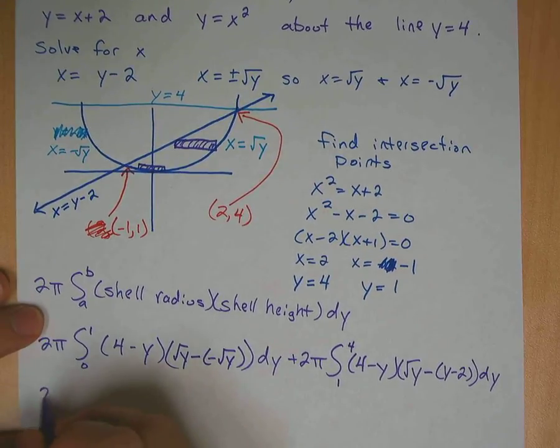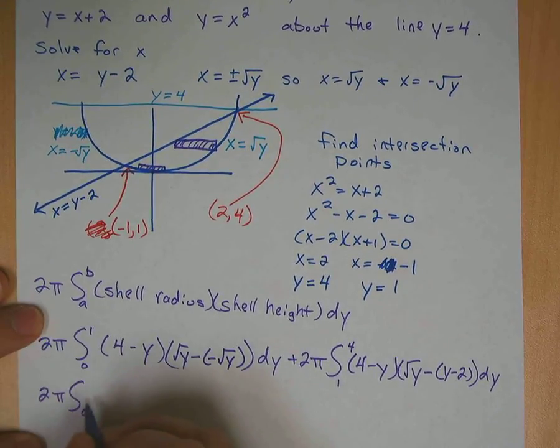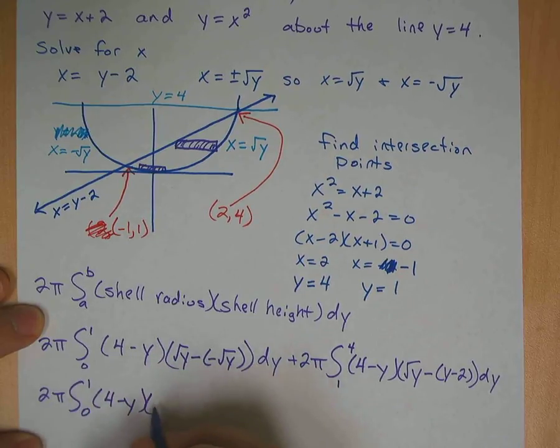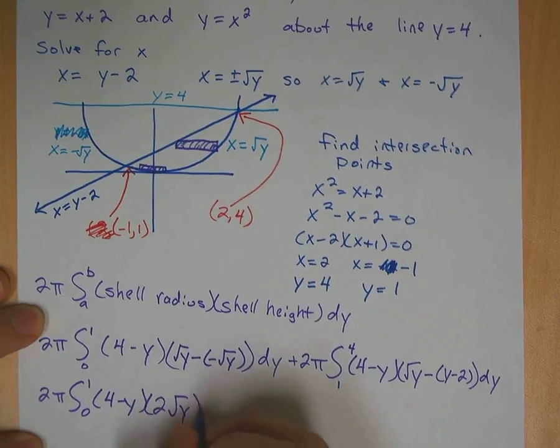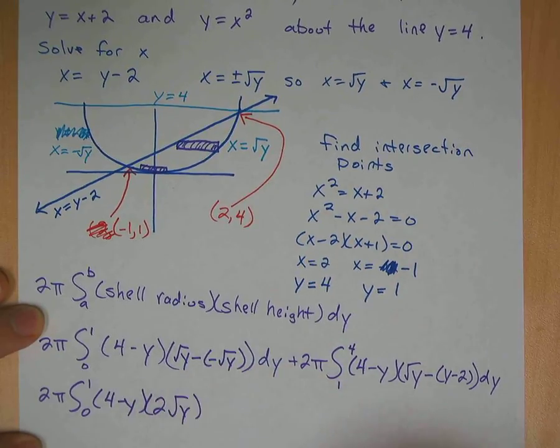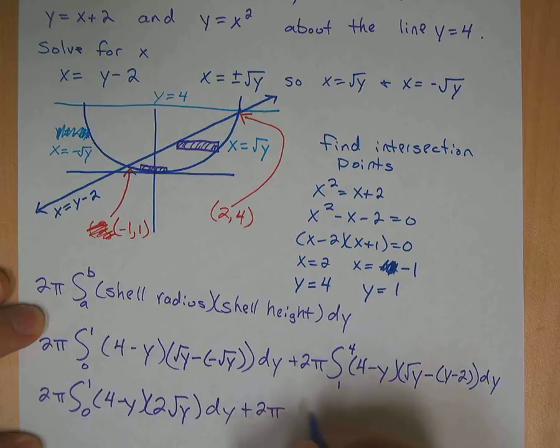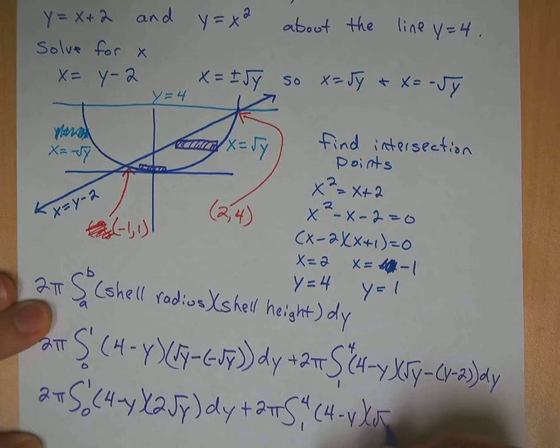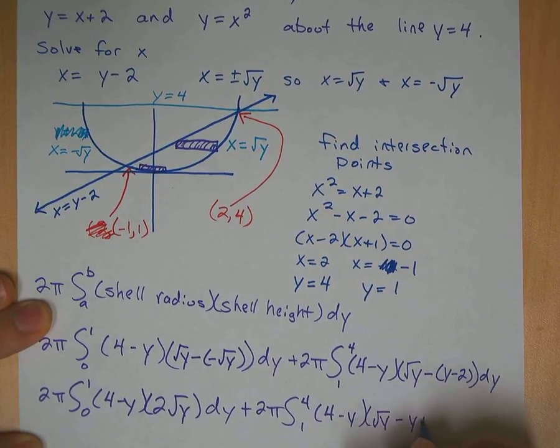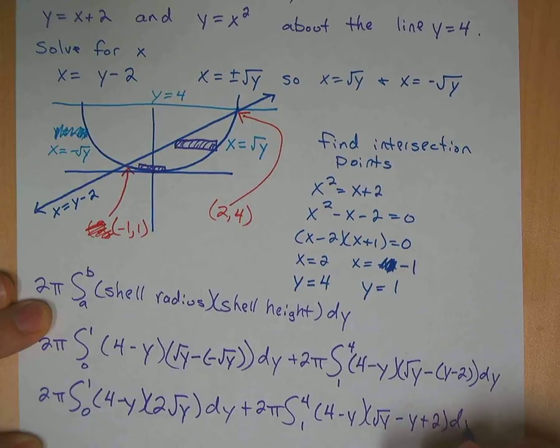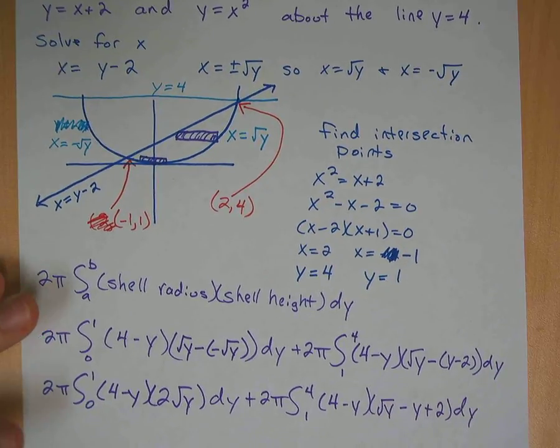And you could clean that up a little. I'm not going to solve out the whole integral. You can either solve this by hand, which would take a little bit of time, or you could put it in a calculator, which would be a little quicker. Minus and minuses is obviously a plus, so it's 2 square root of y dy, plus 2 pi from 1 to 4 of 4 minus y times square root of y minus y plus 2 dy. I'll leave the rest of it to you.